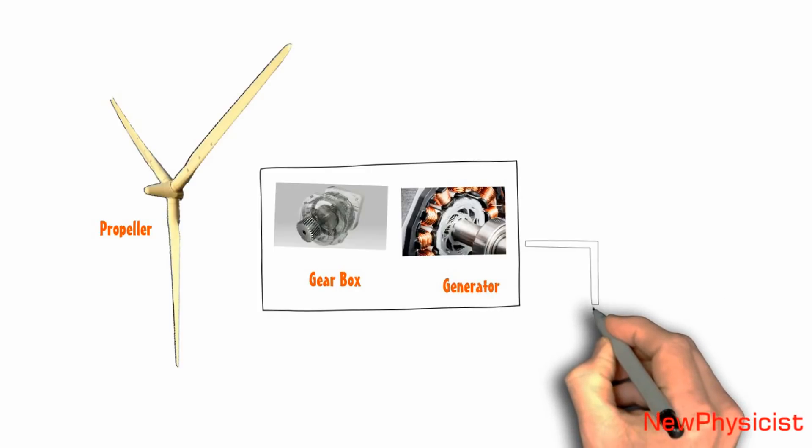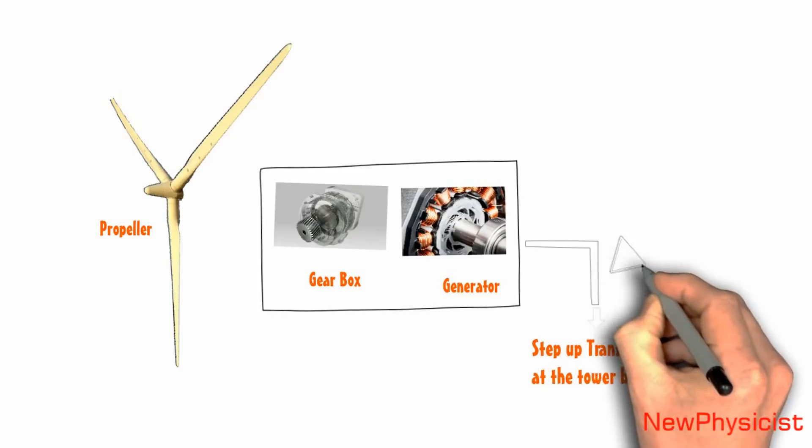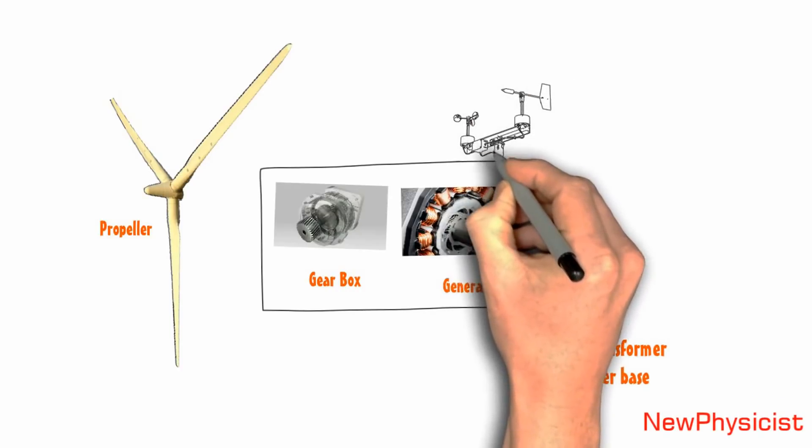This output current from the dynamo will be sent to the tower base, where there is a step-up transformer which will step up the dynamo output to a convenient voltage for distribution to the grid.